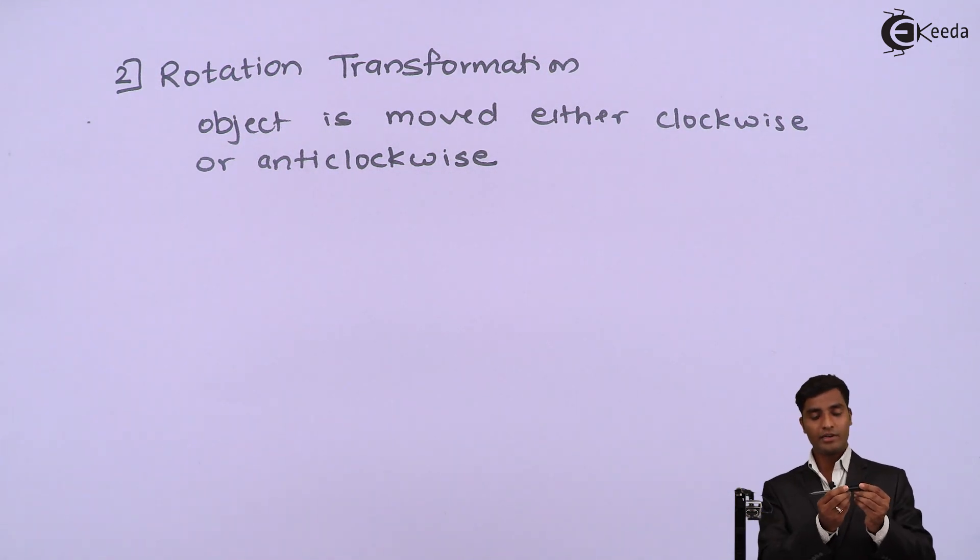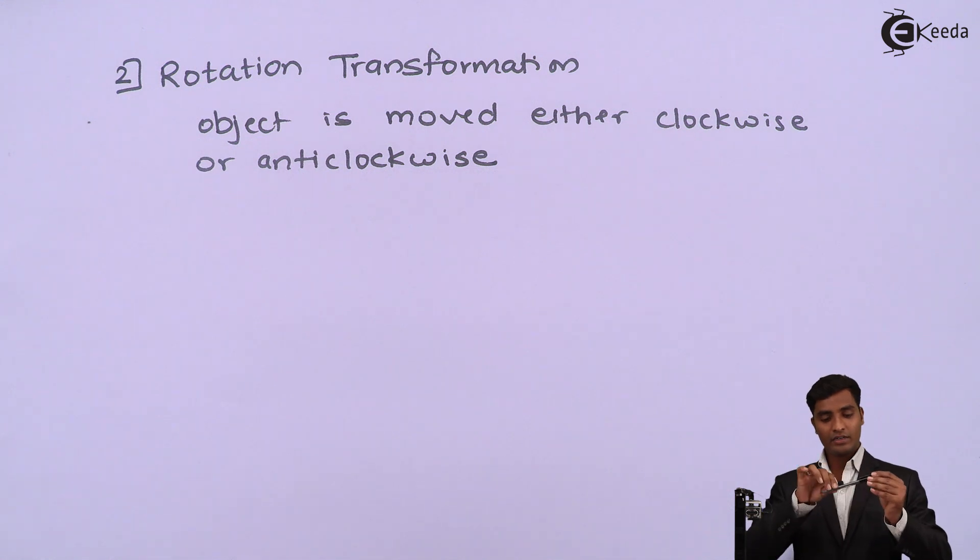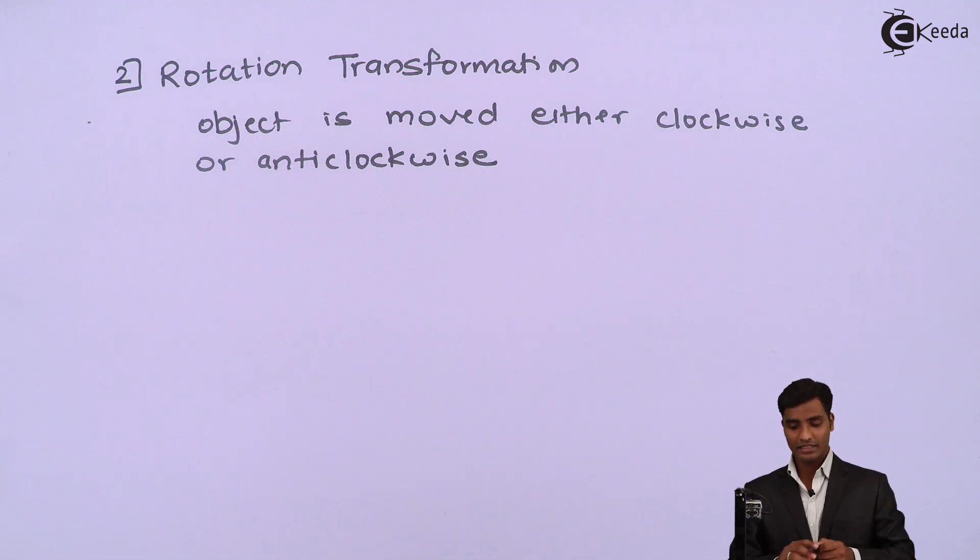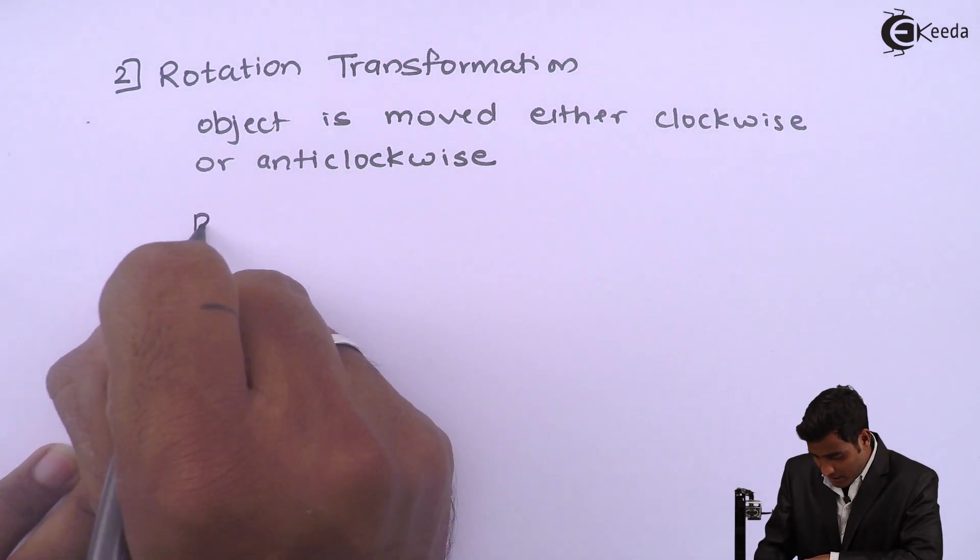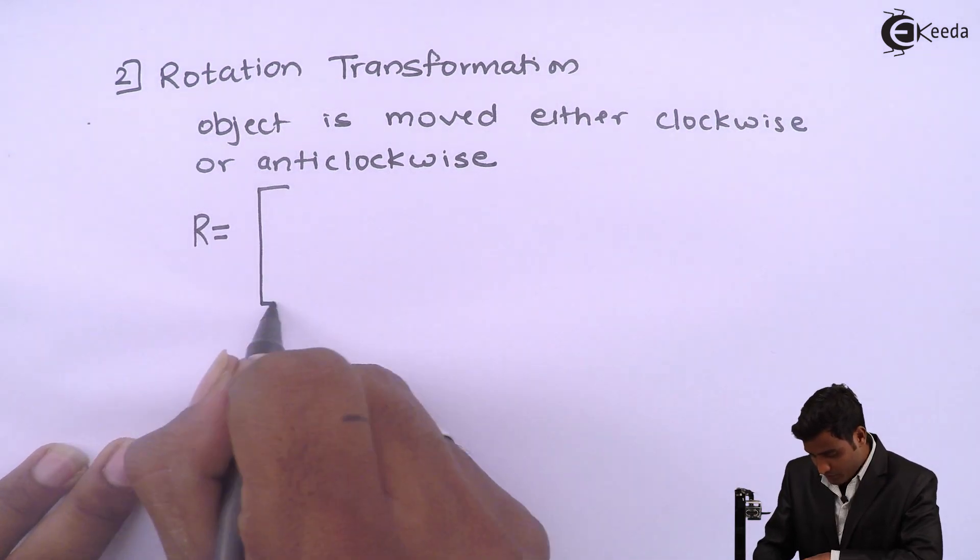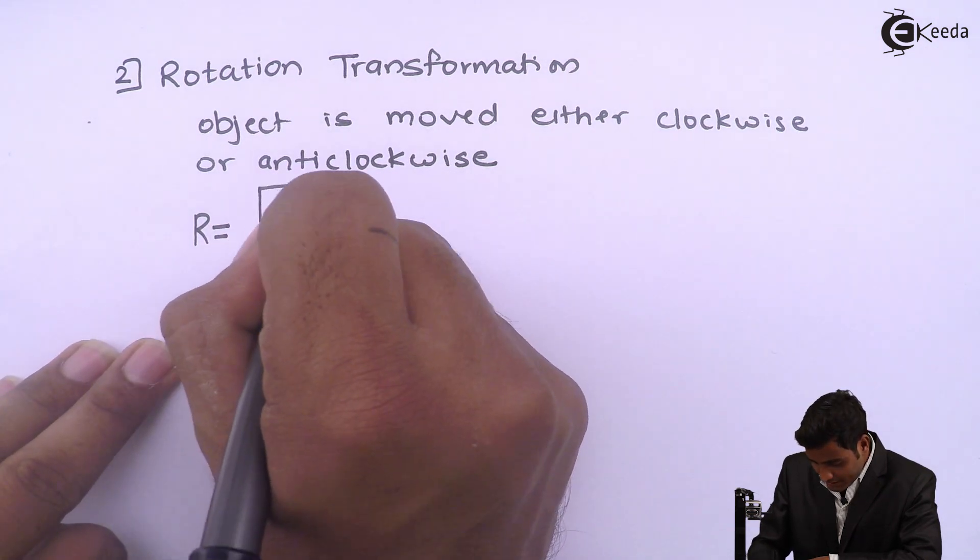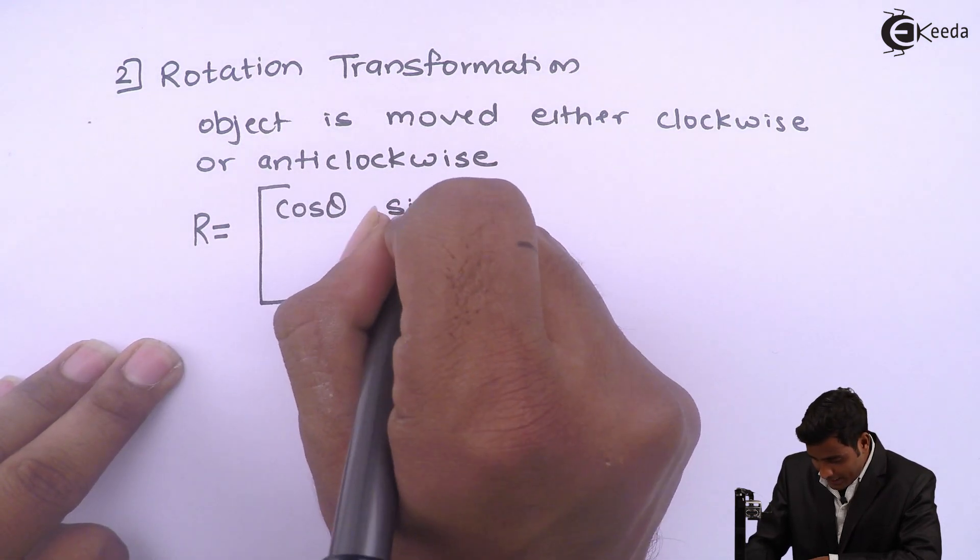Means we are moving anti-clockwise direction and angle is 90 degree. So we will do with this that only the standard rotation matrix is R is equal to cos theta sin theta 0, minus sin theta cos theta 0, 0 0 1.